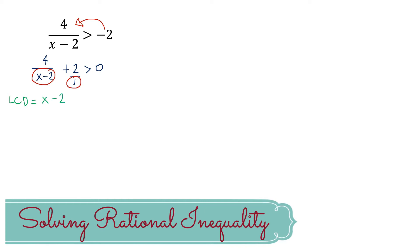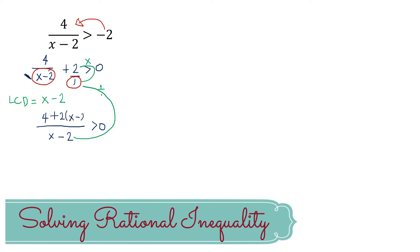After getting the LCD, we rewrite those two terms as one fraction with denominator x minus 2. Since the first term already has the same denominator as the LCD, we just copy its numerator, 4. For the second term, we divide the LCD by its denominator — the quotient is x minus 2 — then multiply by the numerator, giving us positive 2 times x minus 2. They are now one term with the common denominator x minus 2.